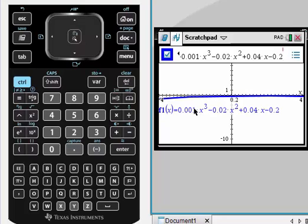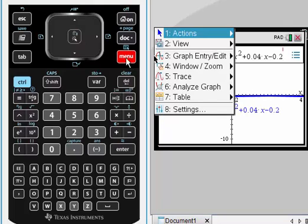You can do this: first of all, go to Menu, then go to Table, split screen table.